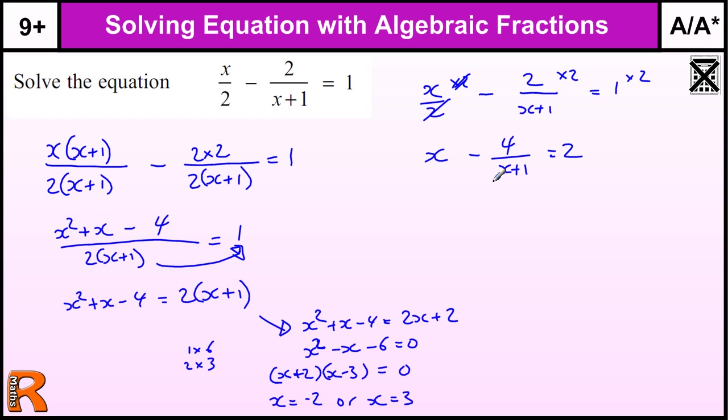Next, multiply through by (x+1). Times each term by (x+1). When I multiply x by (x+1), I get x(x+1). Multiplying 4/(x+1) by (x+1) eliminates the fraction, leaving 4. Multiplying 2 by (x+1) gives 2(x+1). When I expand: x² + x - 4 = 2(x+1). I actually end up with exactly the same expression as before.